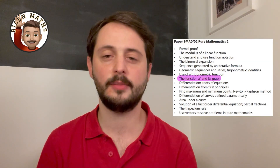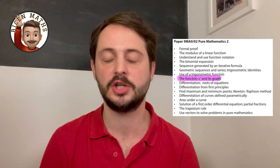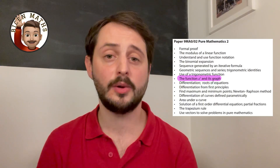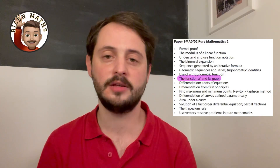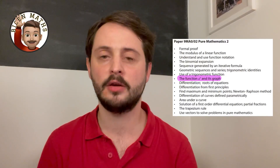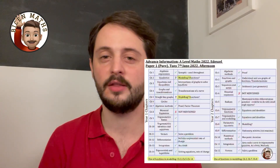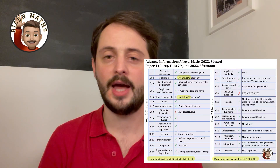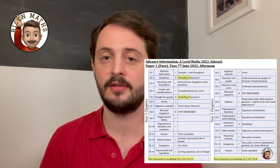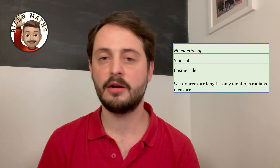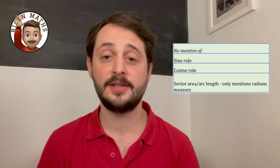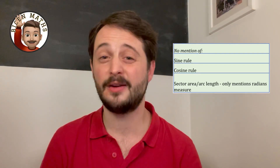Point three: there's a hint of the theme of some of the questions. For example, they explicitly mention a to the power of x as a function, and I would make sure that I knew how to do everything with that - from sketching it, graph transformations, integrating, differentiating, using it in modelling scenarios - because you know for sure it's going to be coming up. Point four: they don't mention modelling very much at all. Point five: some things aren't mentioned anywhere at all, for example the sine rule, the cosine rule, area of sectors or arc length, but that doesn't mean they won't be coming up, so you do need to make sure you're prepared for the whole course.